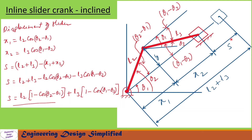From this diagram, the displacement of the piston for any given crank angle theta 2 can be written as S = (L2 + L3) − x1 − x2. Substituting x1 and x2 we get S = (L2 + L3) − L2 cos(theta 2 − theta 1) − L3 cos(theta 1 − theta 3). After rearranging, the displacement of the slider is S = L2[1 − cos(theta 2 − theta 1)] + L3[1 − cos(theta 1 − theta 3)]. This is the equation to find displacement of the slider for any given angle theta 2.